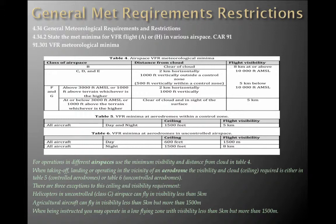You're going to get a question on the exam around this, and they are going to try and confuse you with 1,500 metres and 1,500 feet. So run this around your head a few times — read this, understand it, find your own way to memorise it. The three exceptions are: helicopters in uncontrolled Class G can fly in visibility less than 5K based on speed; ag aircraft less than 5K but more than 1,500 metres; and under instruction in a low-fly zone, less than 5K but more than 1,500 metres.